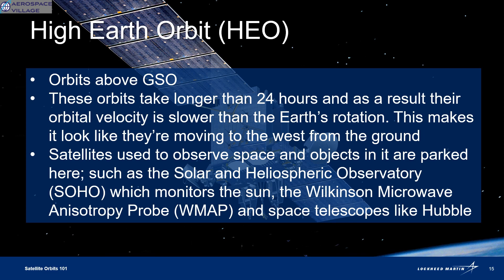Lastly, there's HEO, or High Earth Orbit. This is anything beyond the geosynchronous threshold. These orbits take longer than 24 hours, and a vehicle in one of these is actually moving slower than the Earth's rotation. Because it's moving slower than the Earth's rotation, it would look to us as though the satellite were moving to the west — but it's not retrograde. This type of orbit is where we park space telescopes and long-range monitoring satellites.